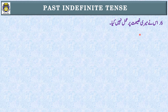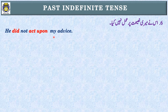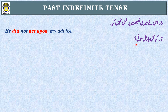Sentence number six: 'He did not act upon my advice.' First step: identification of tense — past indefinite tense. Second step: the subject is 'he.' Since this is negative, we use 'did not' with the first form: 'He did not act upon my advice.' Remember: 'advice' is a noun (pronounced with an 's' sound), while the verb form is 'advise' (with a 'z' sound).